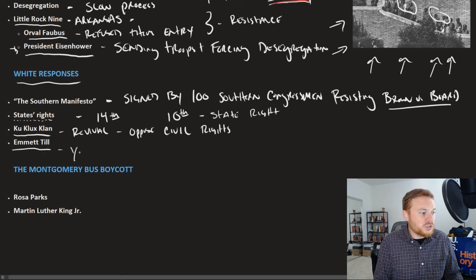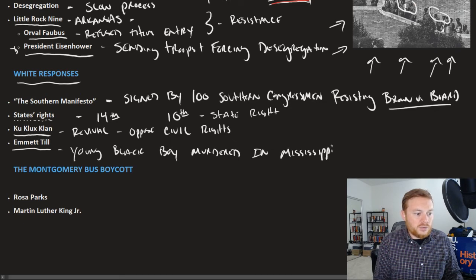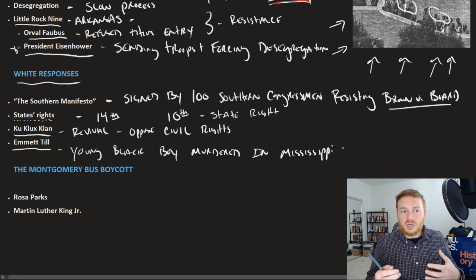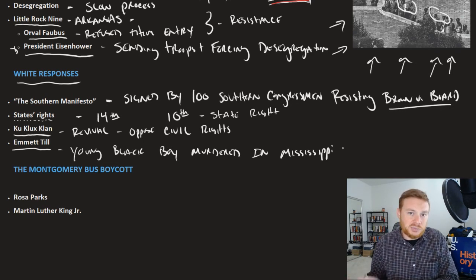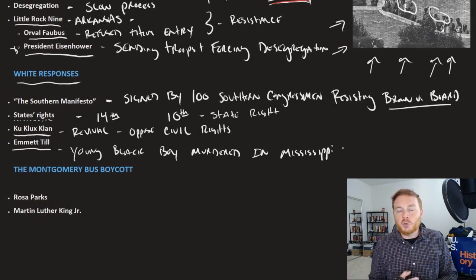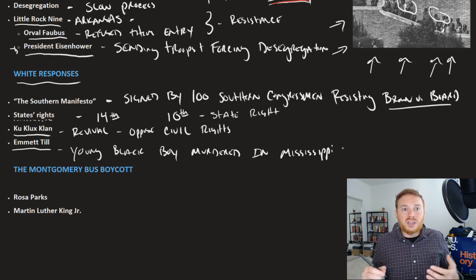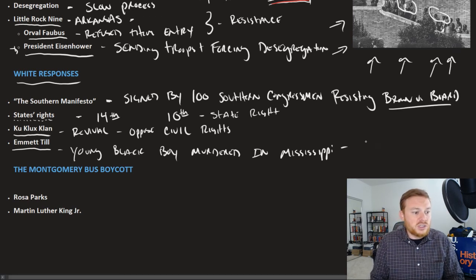Resistance could also be violent. Emmett Till was a young black boy who was murdered in Mississippi. His murder made national headlines because his mother chose to have an open casket funeral. He had been beaten to death, and the open casket shocked Northern audiences to see the brutality occurring in the South. Emmett Till's only offense was saying something to a white woman deemed inappropriate — and he was killed for it. The perpetrator was found not guilty by an all-white jury despite strong evidence, sparking national outrage.